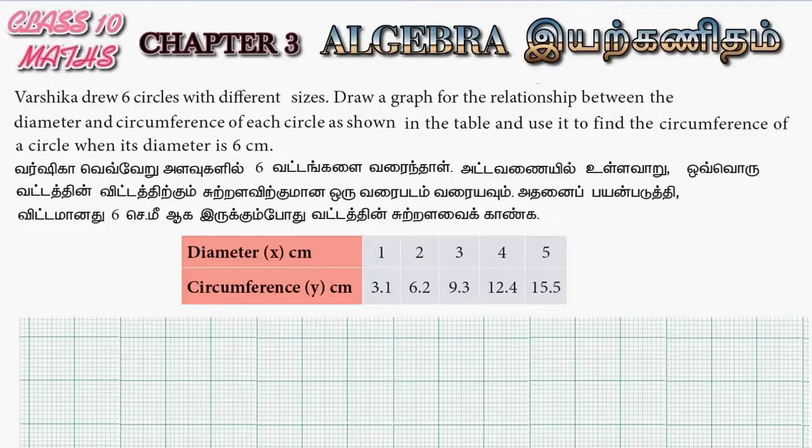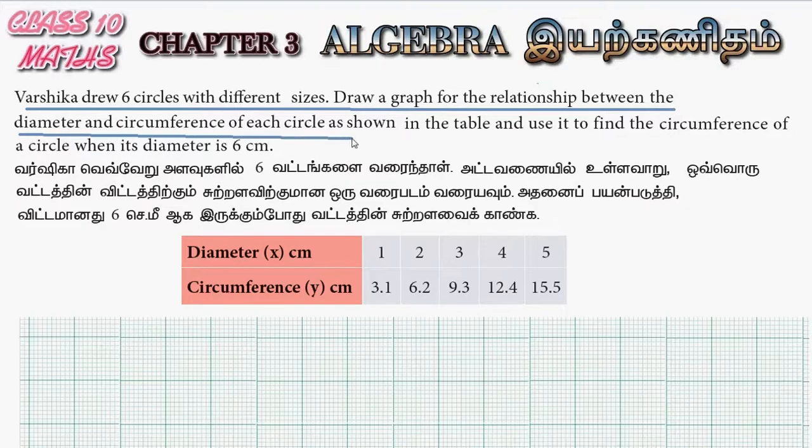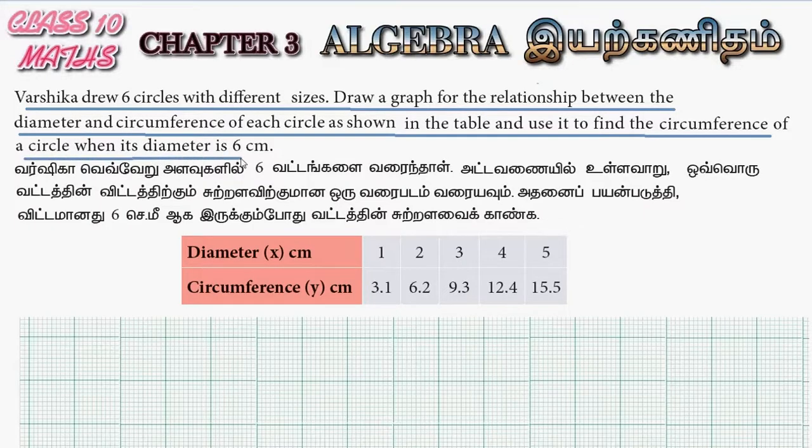Hi students, this is Alexi here. Vershika drew 6 circles with different sizes. Draw the graph for the relationship between the diameter and circumference of each circle as shown in the table and use it to find the circumference of the circle when diameter is 6.